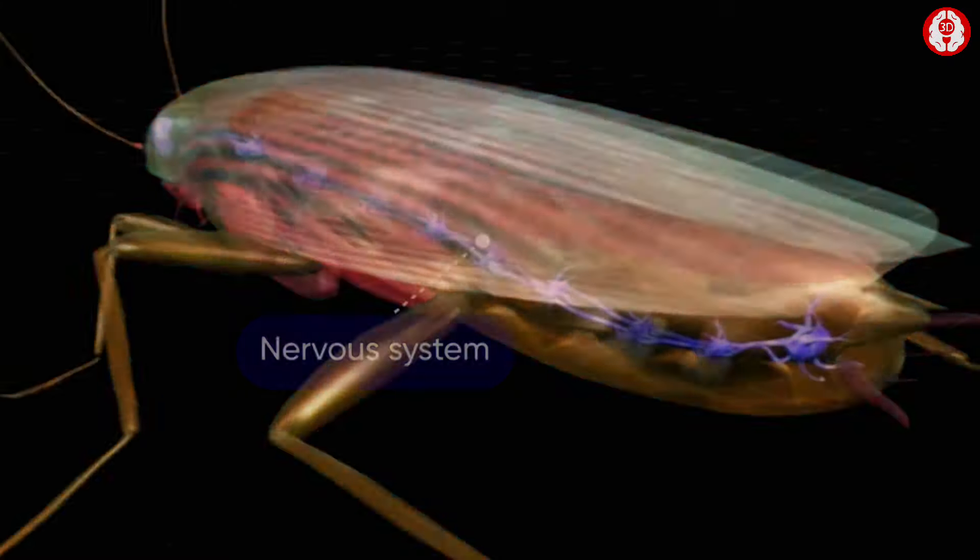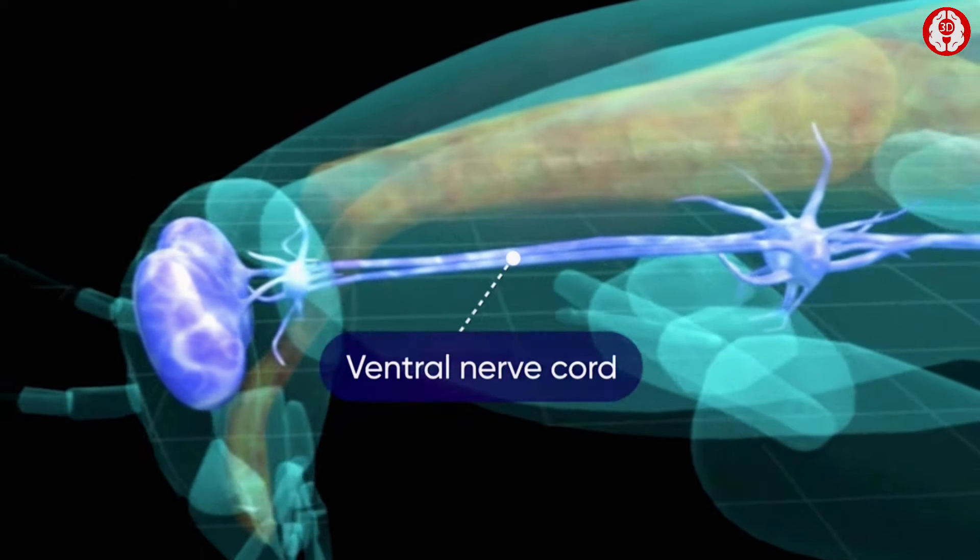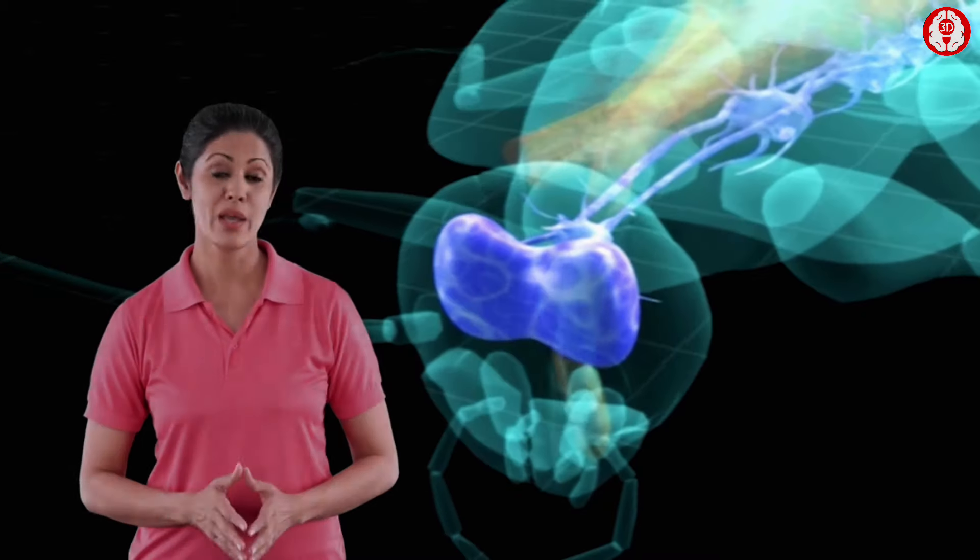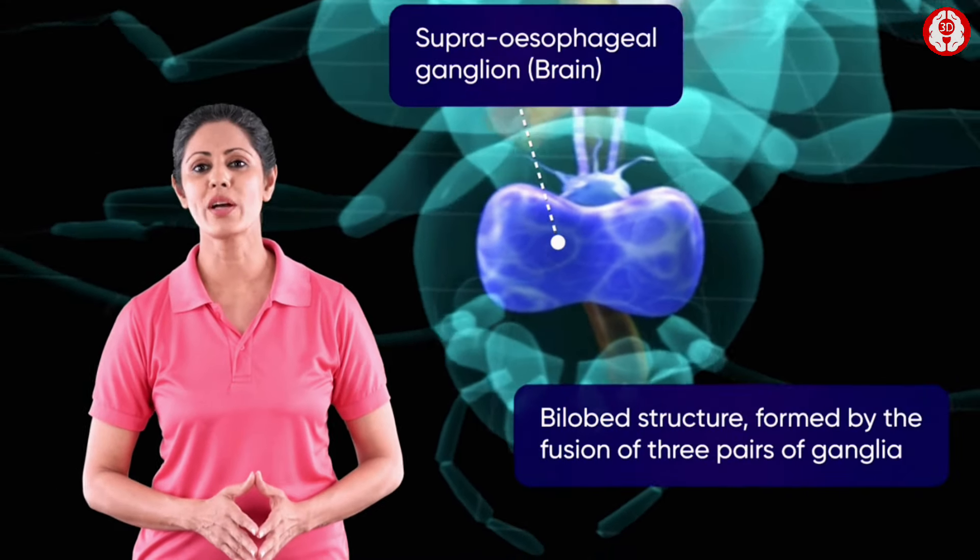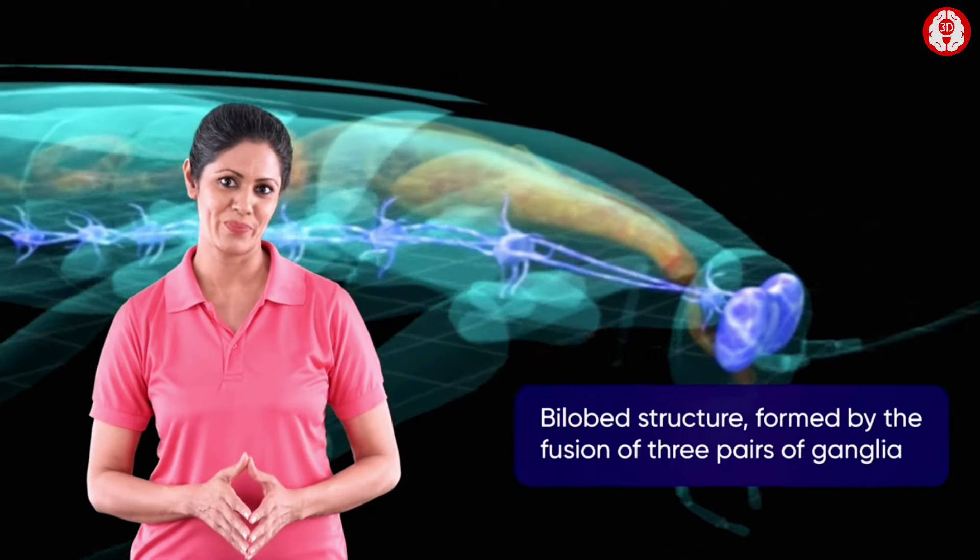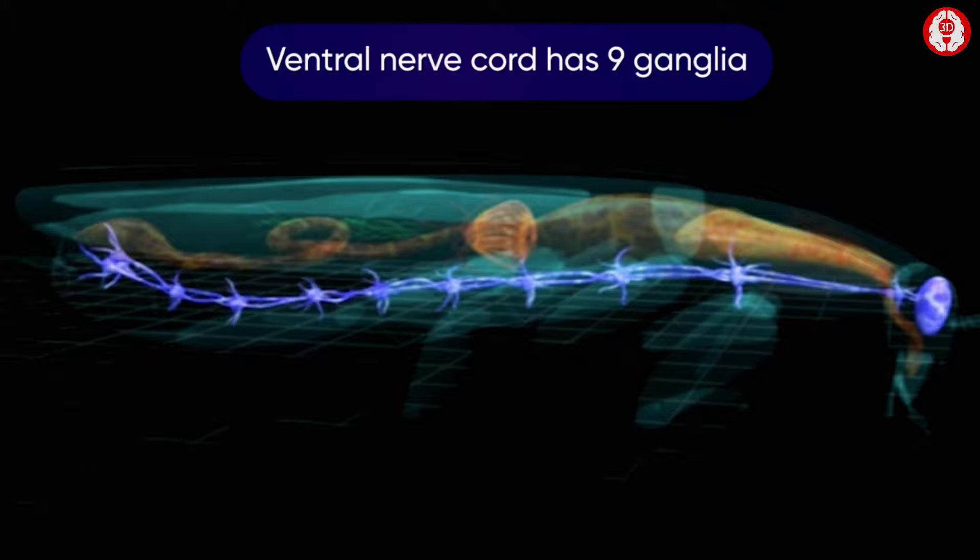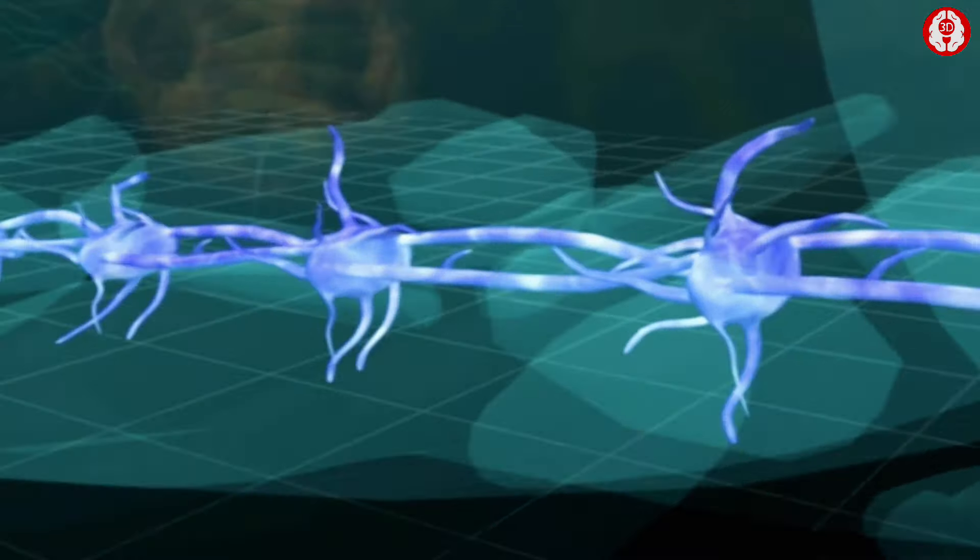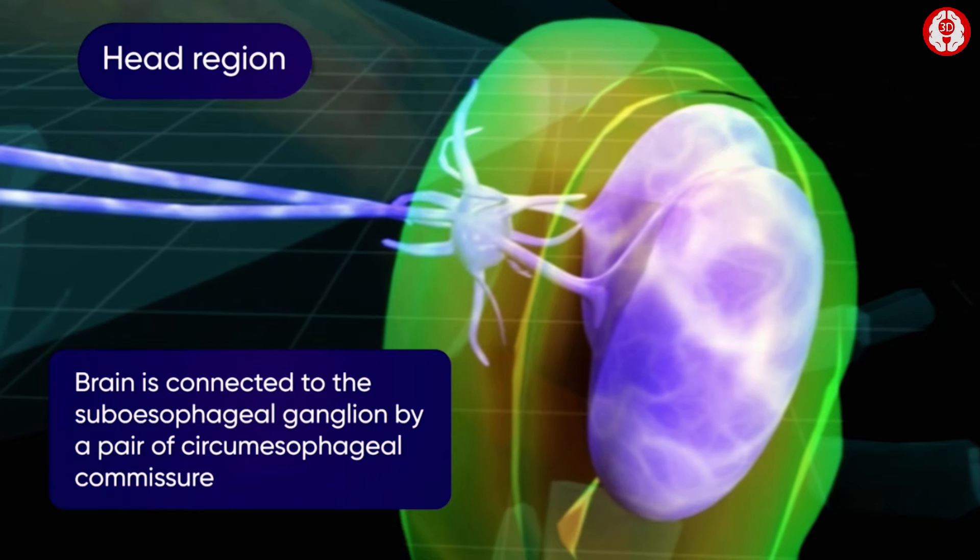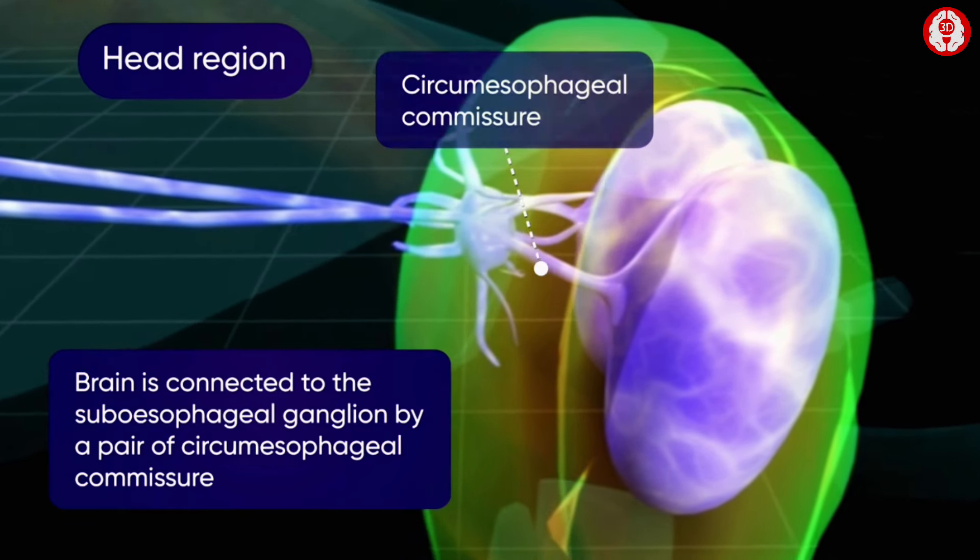The cockroach has a nervous system comprising the brain, the ventral nerve cord, ganglia, and nerves. The brain, or the supra-esophageal ganglion, is made up of three ganglia which are fused together. The ventral nerve cord has nine ganglia linked to each other by paired connections. The brain is connected by a pair of circum-esophageal commissures to the first ganglion of